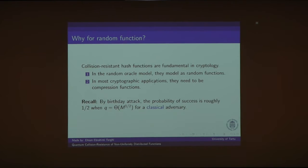To recall, in the classical case, by a birthday attack, the probability of success is roughly half when the number of queries is the square root of m, where m is the codomain of the function. This is the case of a classical adversary.